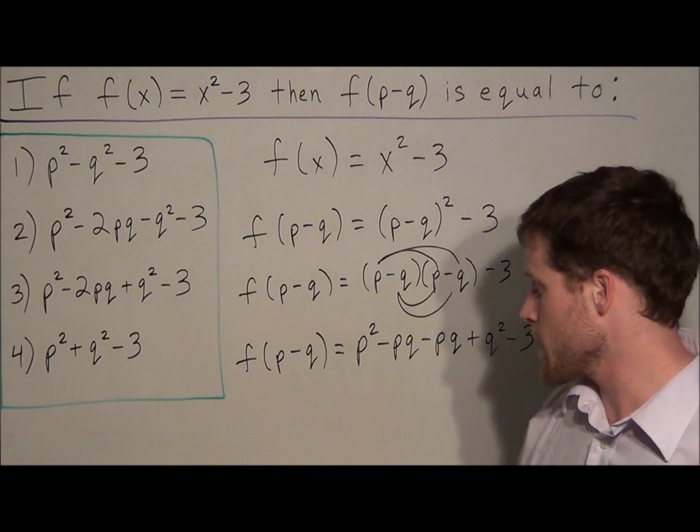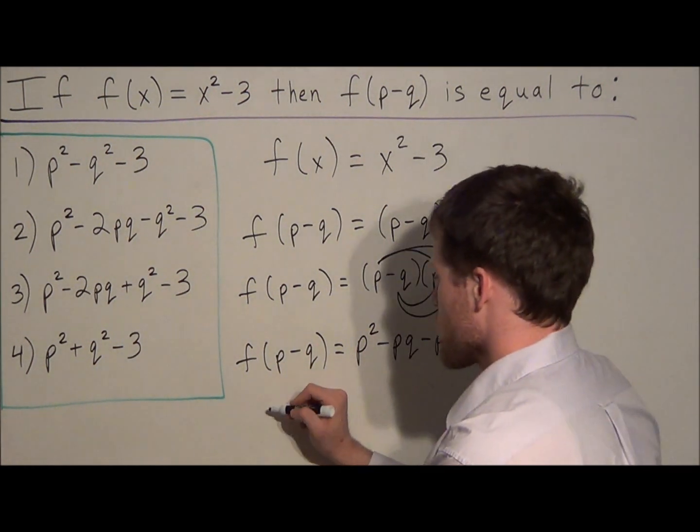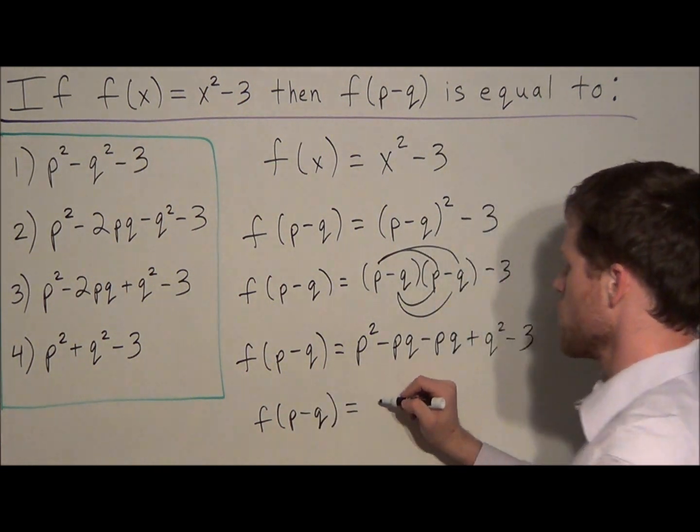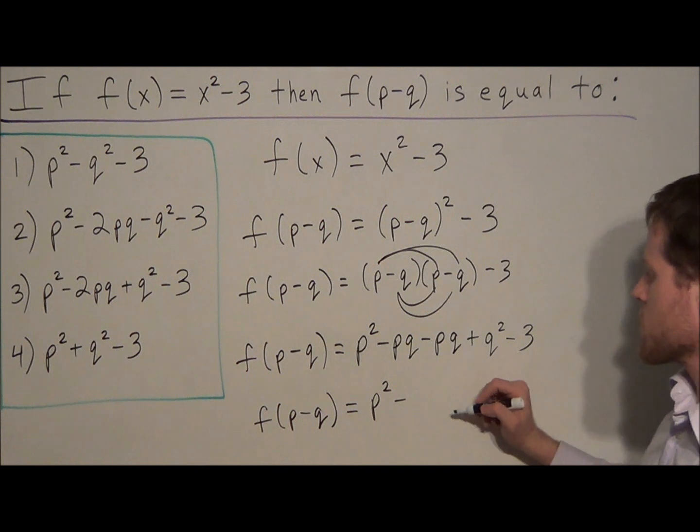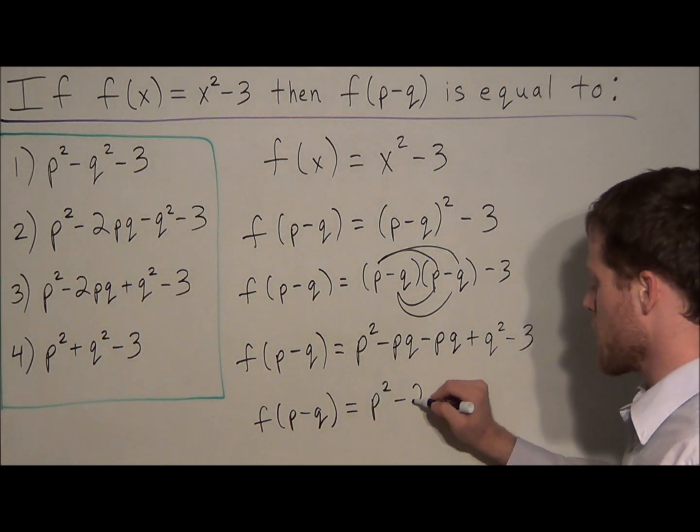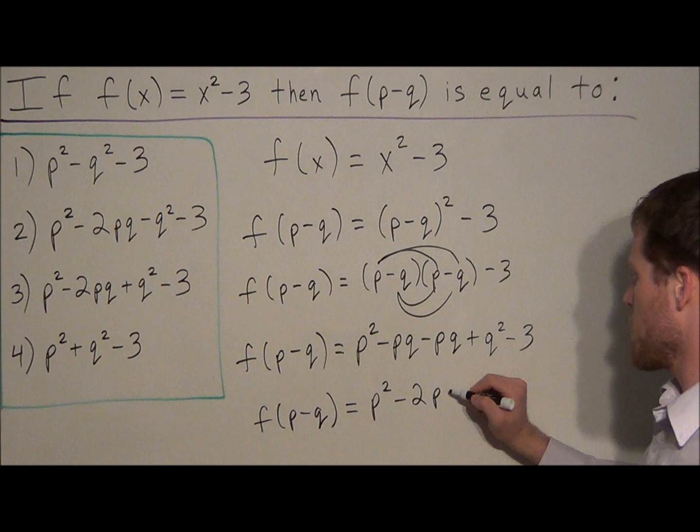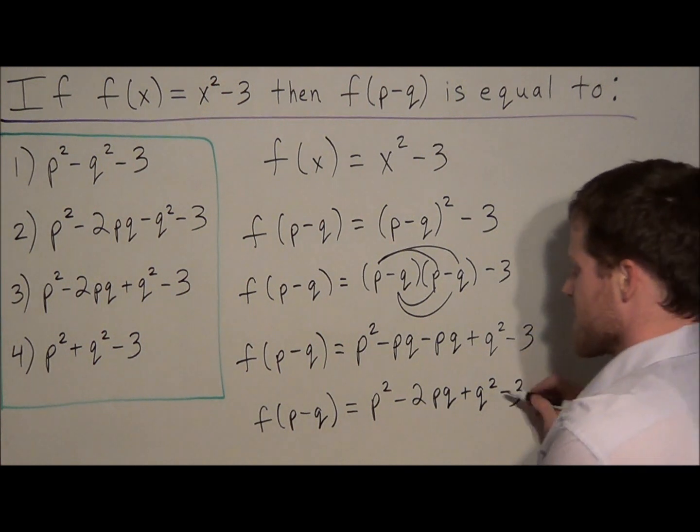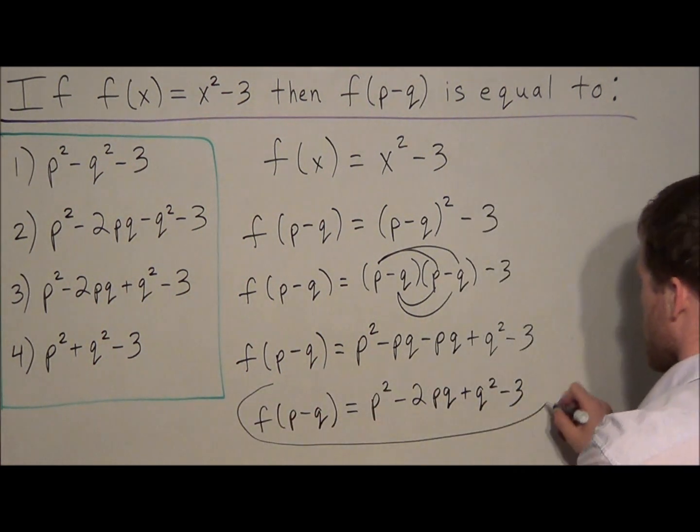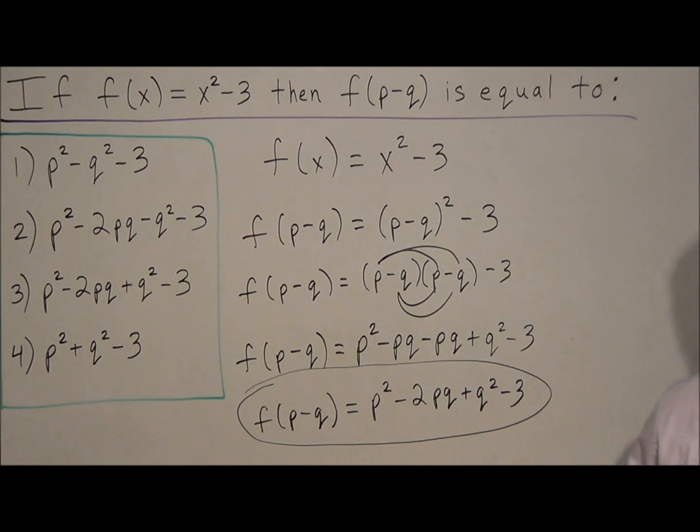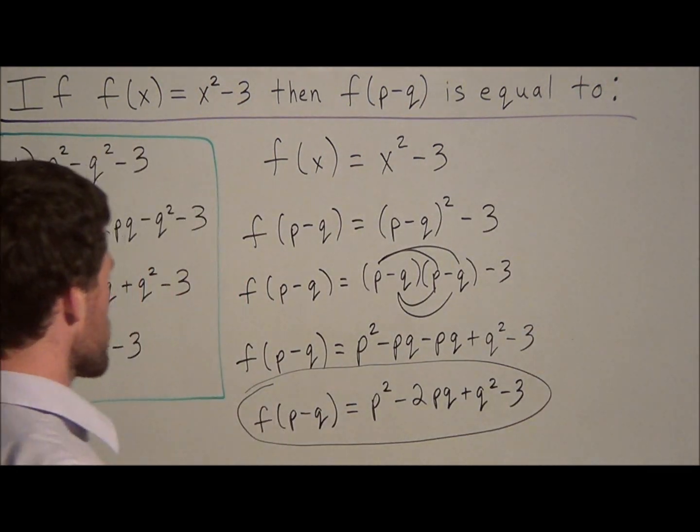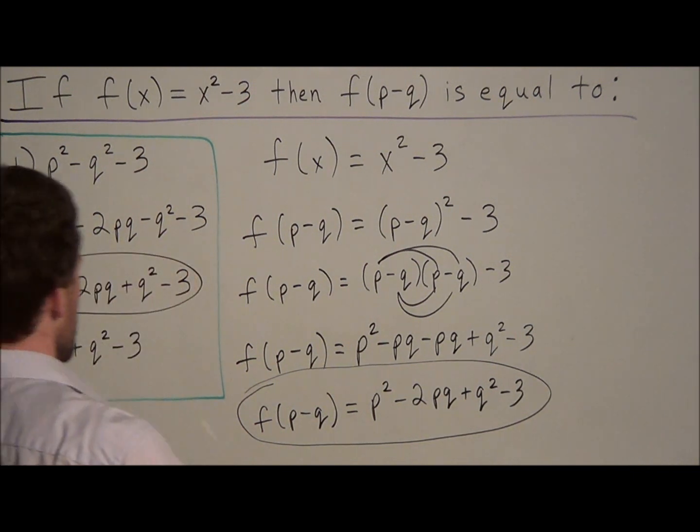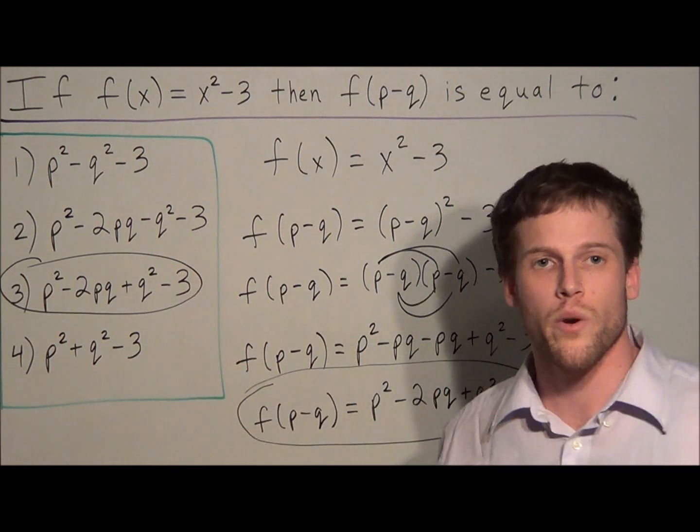So then for the last line, what we could do is we could combine like terms. So we have f of p minus q is equal to p squared minus, well, we have minus pq minus pq, that's minus two pq plus q squared minus three. So this is as reduced or as simplified as we could get this expression. So we go over to our answer key, and notice that our answer matches up with choice three. We have p squared minus two pq plus q squared minus three.